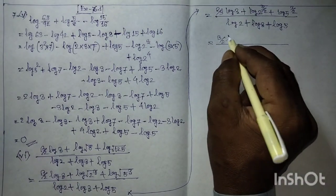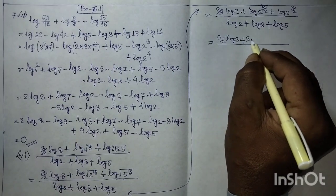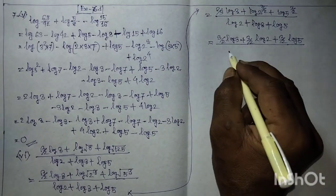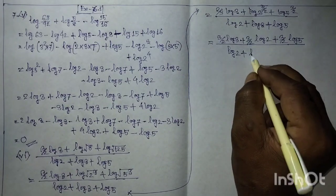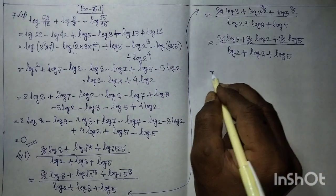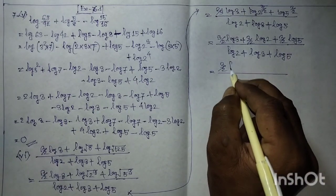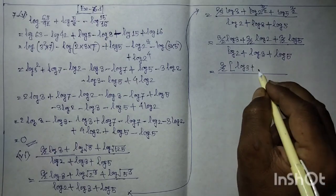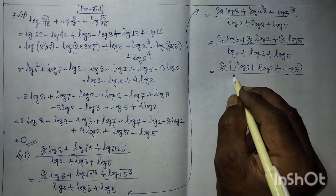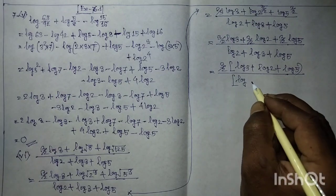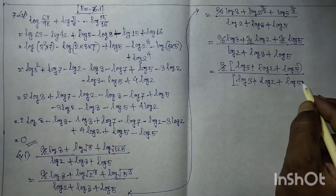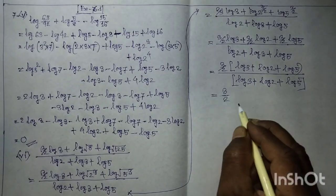This gives: log 3 plus log 2 plus log 5, divided by log 2 plus log 3 plus log 5. Taking (3/2) as common factor: (3/2) times (log 3 plus log 2 plus log 5) divided by (log 3 plus log 2 plus log 5) is equal to 3/2.